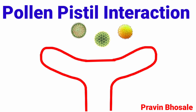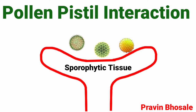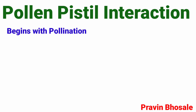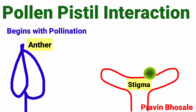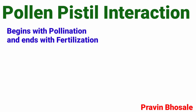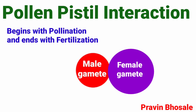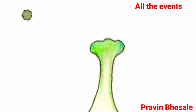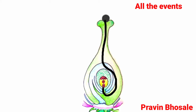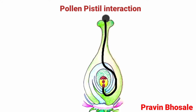Pollen-pistil interaction is the interaction of pollen grains with sporophytic tissue of stigma. It begins with pollination — the transfer of pollen grain from anther to the stigma — and ends with fertilization, meaning the fusion of male gamete with female gamete. All the events from the deposition of pollen grain on stigma to the entry of pollen tube in the ovule synergid are referred to as pollen-pistil interaction.